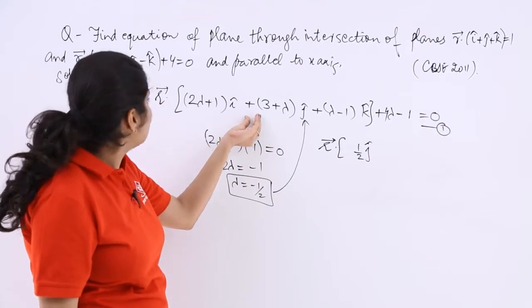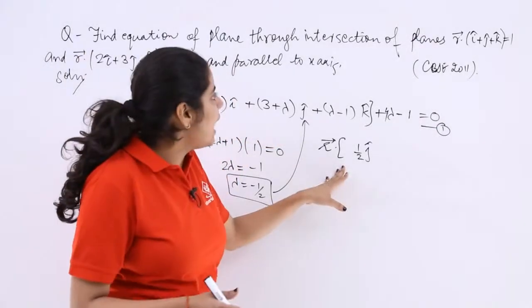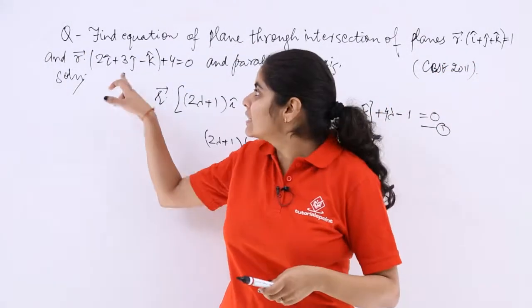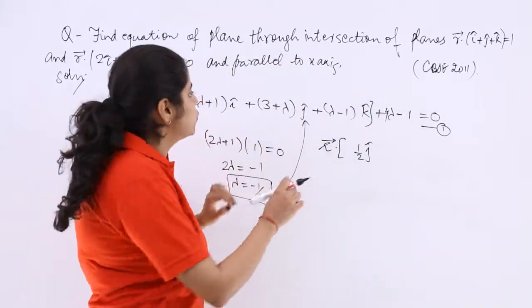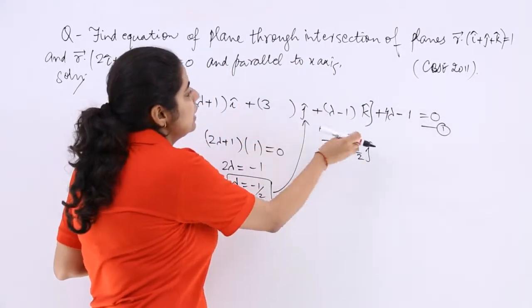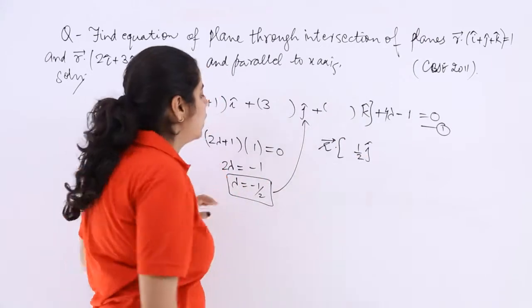3 minus 1 by 2 is 1 by 2, so just keep it 1 by 2 j cap. One more thing to notice: the given equations had the first equation like this, the second like this. We need to change this because the lambda should be associated correctly.